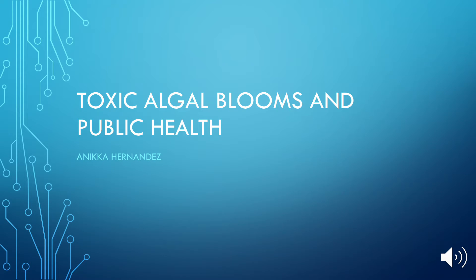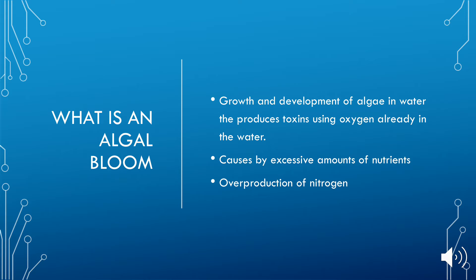Today we're discussing toxic algal blooms and what they have to do with public health. First, we need to understand what an algal bloom actually is. An algal bloom is a development of algae in water. Excessive amounts of nutrients can cause an algal bloom and an overproduction of nitrogen. The nitrogen goes into the ocean, starts causing everything to grow too fast at an excessive rate, traps nutrients in the water, and causes fish and everything in the lakes to start to die.